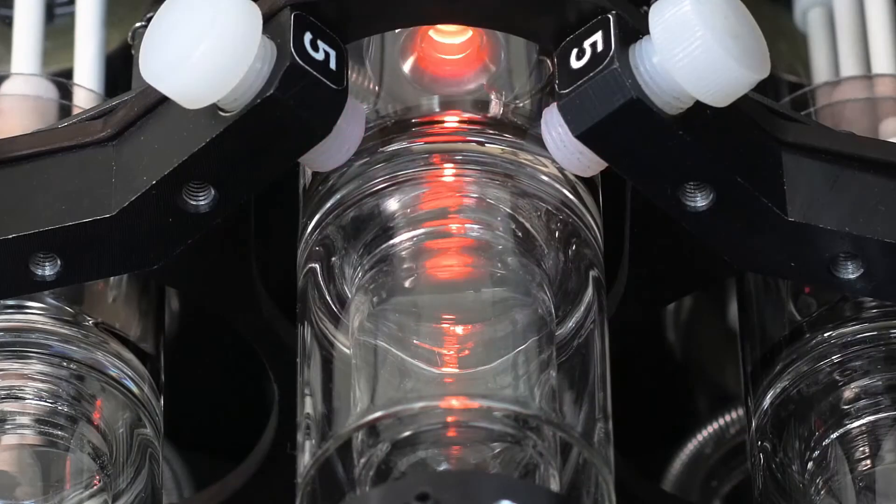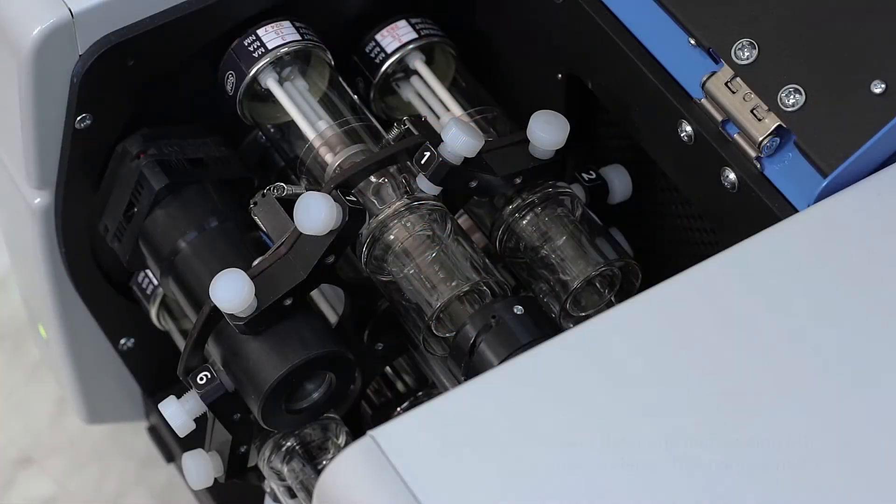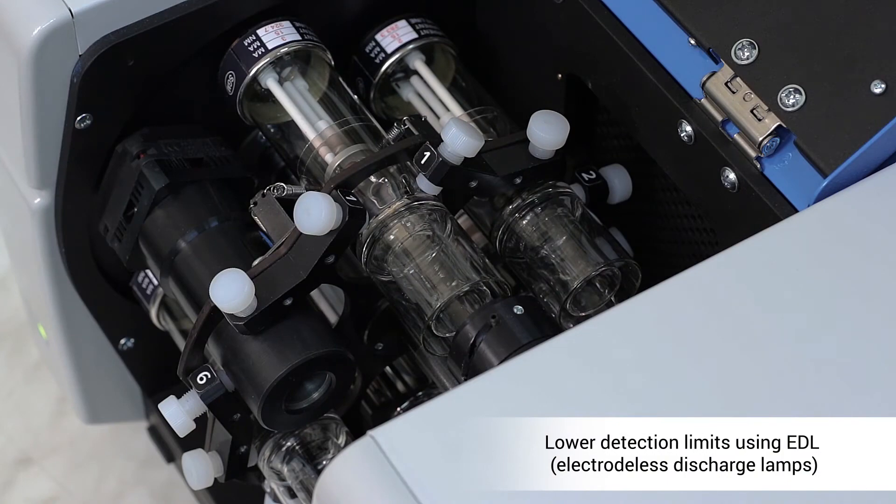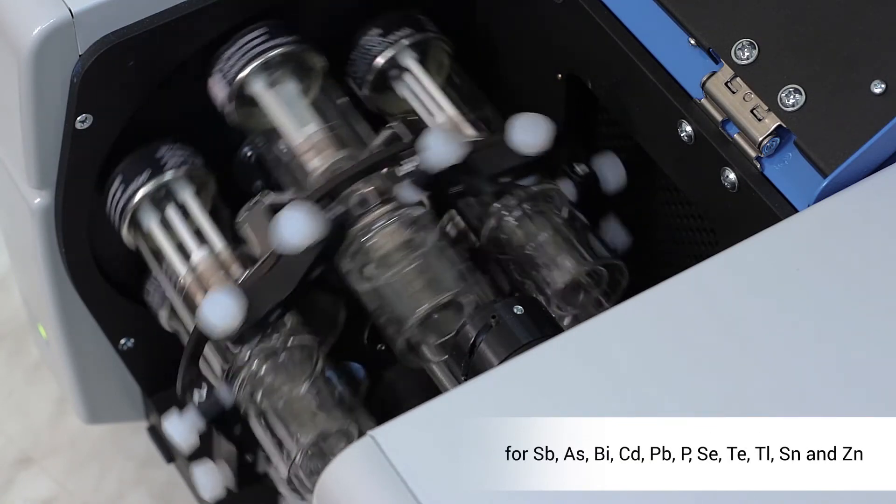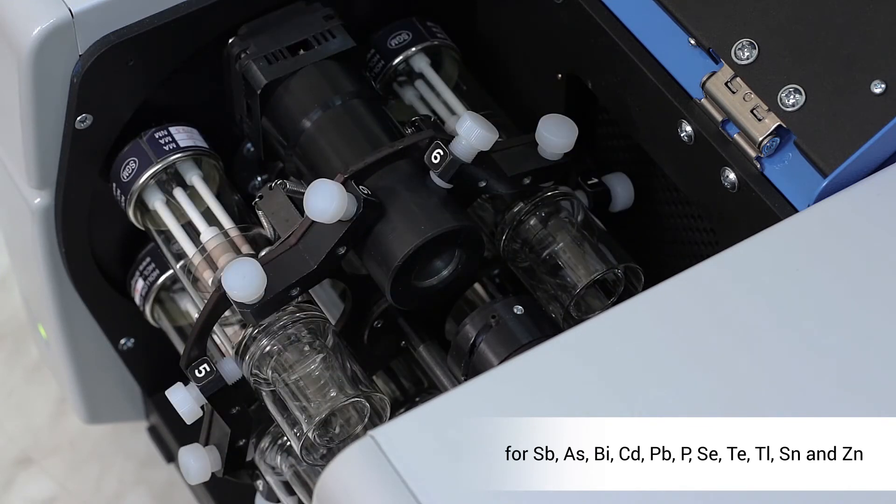The instrument works with both traditional hollow cathode lamps and high-intensity electrode-less discharge lamps. Using EDL improves detection limits for certain elements, such as antimony, bismuth, cadmium, lead, phosphorus, tellurium, thallium, tin, and zinc.